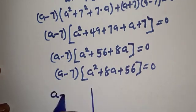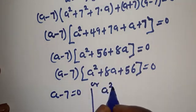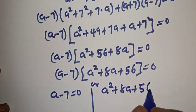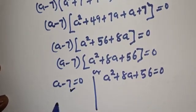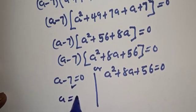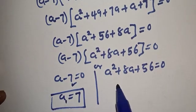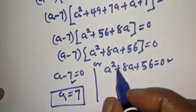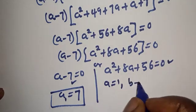So we have (a minus 7)(a squared plus 8a plus 56) equal to zero. There are two cases: the first case is a minus 7 equals zero, or the second case a squared plus 8a plus 56 equals zero. From the first case, a is equal to 7. This is the first value of a.